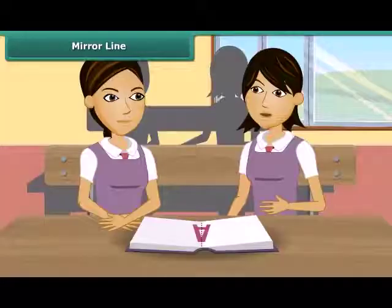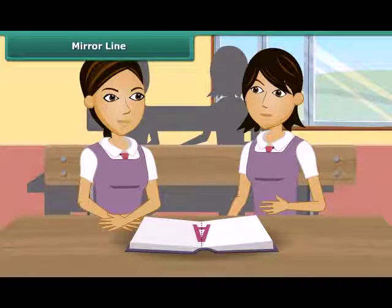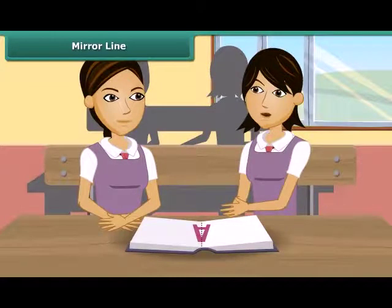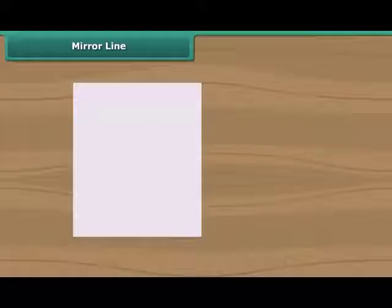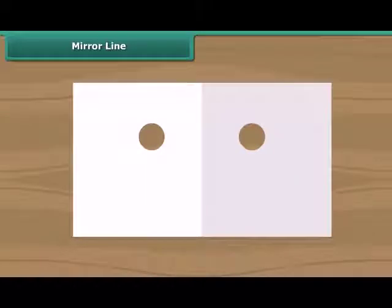Let's play a game now — the punching game. In this game, we will fold these papers and punch a hole. This is so simple. Now open these papers. We can see two holes which are symmetric. The fold is a line of symmetry.